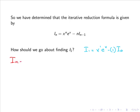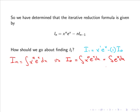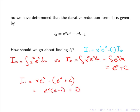We were given that iₙ equals the integral of xⁿeˣ dx. So i₀ equals the integral of x⁰eˣ dx, which is simply the integral of eˣ dx, giving eˣ + c. Hence i₁ equals xeˣ minus 1 times i₀, which is eˣ + c, tidying up to give eˣ(x - 1) + d, where d equals minus c.